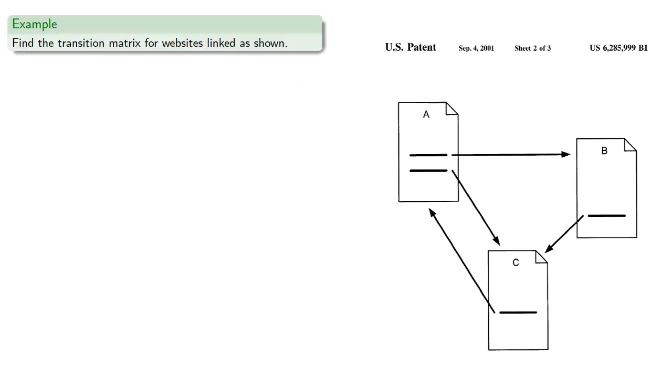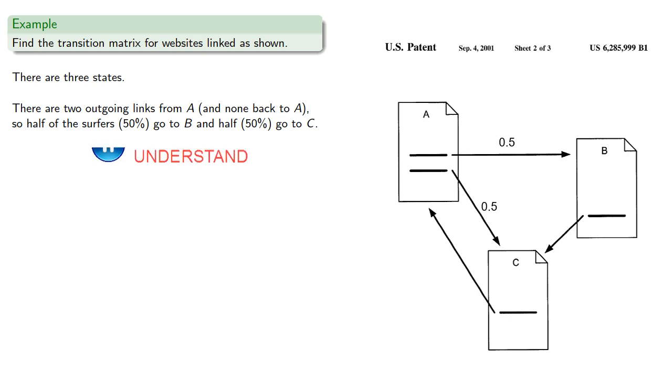Outgoing traffic is divided evenly among all links. So let's find the transition matrix for the linked websites shown. So note there are three states, three web pages. There are two outgoing links from A, and none that go back to A. So traffic is split evenly. Half the surfers, that's 50%, go to B, and half, 50%, go to C. There's only one outgoing link from B, so all of the surfers, 100%, go to A.